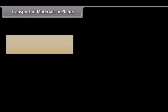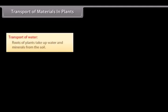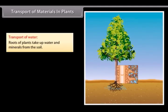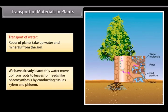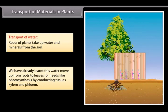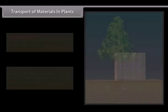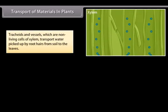Transport of materials in plants. Transport of water. Roots of plants take up water and minerals from the soil. Water moves up from roots to leaves for needs like photosynthesis by conducting tissues, xylem and phloem. Tracheids and vessels, which are non-living cells of xylem, transport water picked up by root hairs from soil to the leaves.